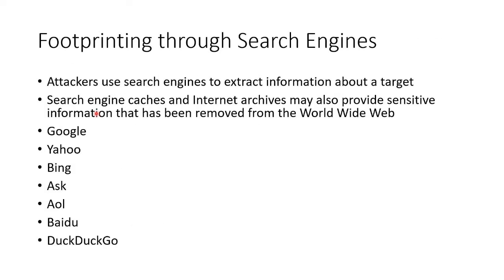With search engines, you're trying to extract all you can about a target, and there's a lot that can be obtained. Not only just using search engines, but also internet archives from what was on their websites in years gone by that might provide sensitive information. The archives will have copies of stuff that maybe they've removed — from a week ago or a month ago — stuff they look at and go, 'Oh, we never should have published this,' but it's already been archived. You can check Google, Yahoo, Bing, Ask, AOL, Baidu, and DuckDuckGo.